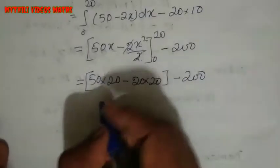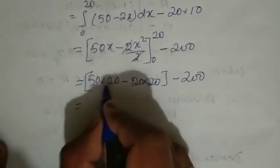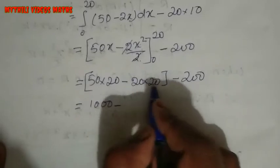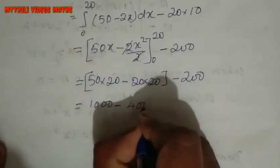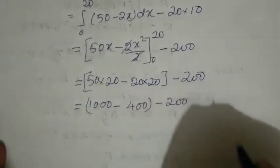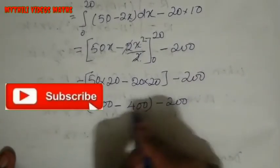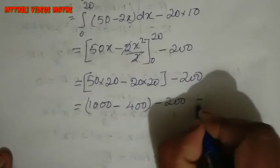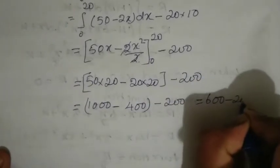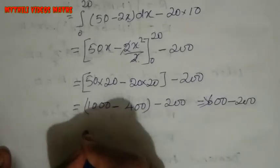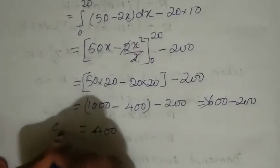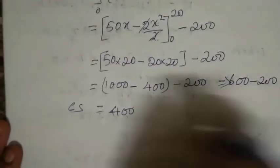Minus 200. This equals 50 times 20, which is 1000, minus 20 times 20, which is 400, minus 200. 1000 minus 400 minus 200 equals 400.